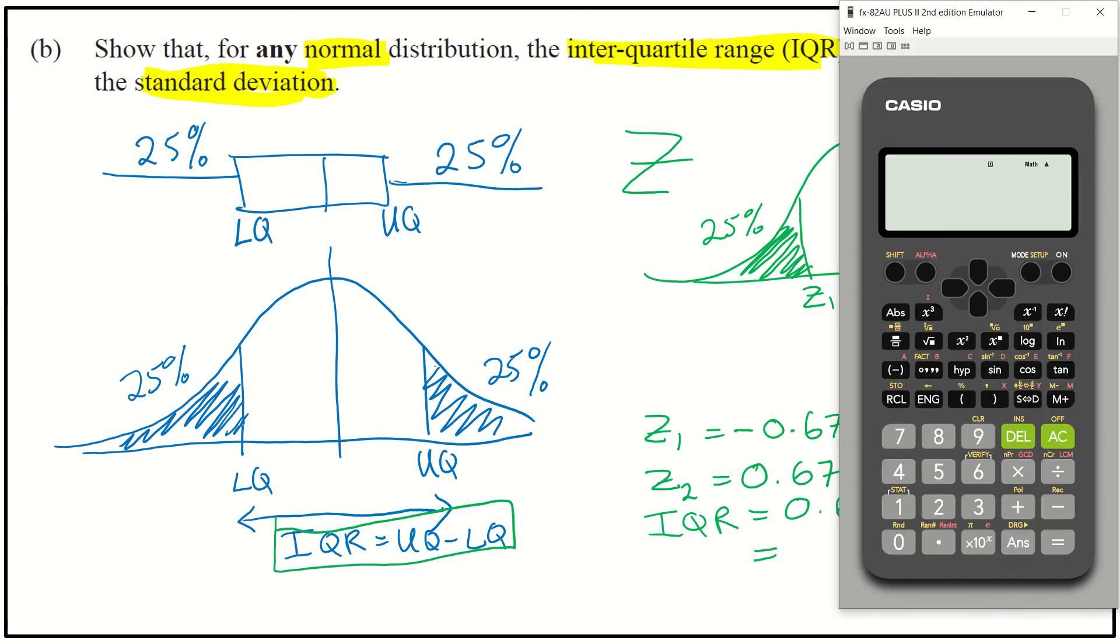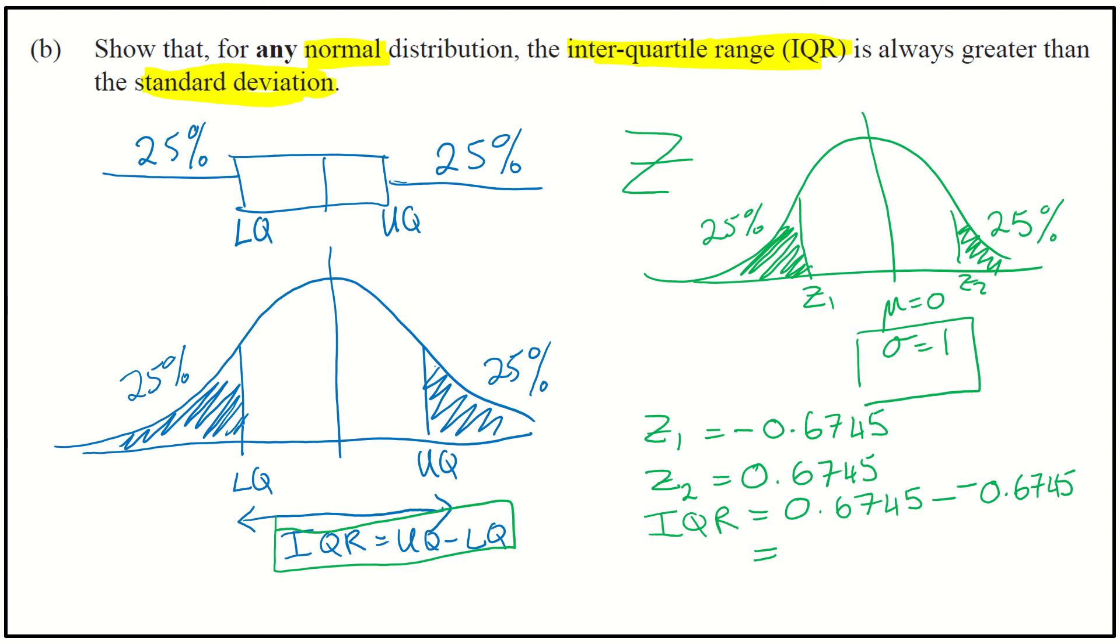And when I do that, if I grab my calculator, so 0.6745 minus negative 0.6745 gives me 1.349. Okay. So I've found how many standard deviations the spread is for my interquartile range. So the interquartile range is equivalent to 1.349 standard deviations.